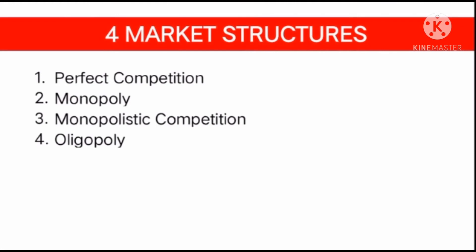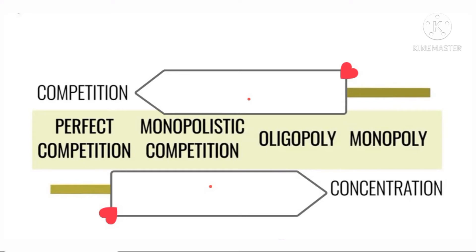Based on the above characteristics, we can now categorize all firms into four. Perfect competition and monopoly are extreme forms of market structure, while monopolistic competition and oligopoly are called imperfect competition because firms in these markets have competitors, but at the same time do not face as much competition as price takers.